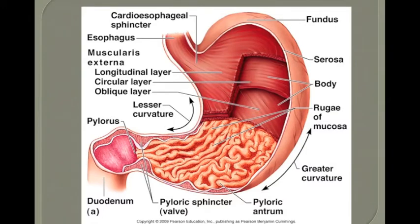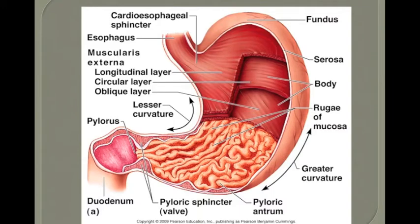When both sphincters are closed, hydrochloric acid and enzymes surround and break down the bolus inside the stomach. Many of you may have experienced the cardioesophageal sphincter not working well — this causes heartburn, where acid moves back up into the esophagus. The pyloric sphincter ensures food stays in the stomach long enough for chemical digestion. Once the bolus has been broken down sufficiently, the pyloric sphincter opens and food moves into the small intestine, starting with the duodenum. At this point, we no longer call it a bolus — we call it chyme, C-H-Y-M-E.